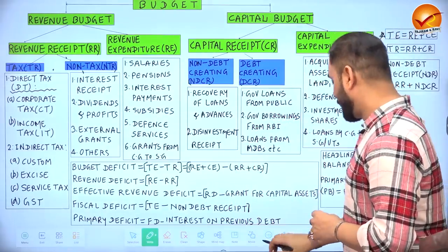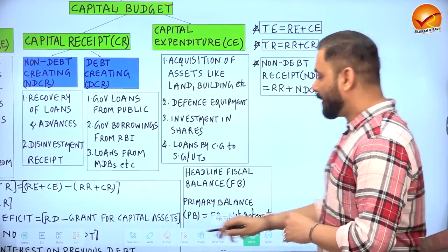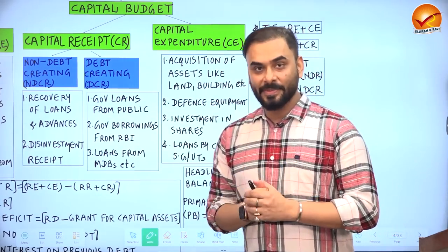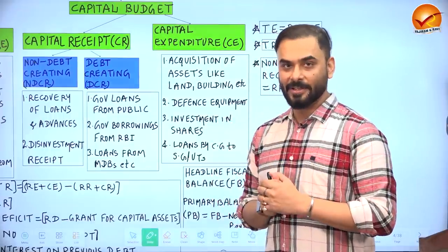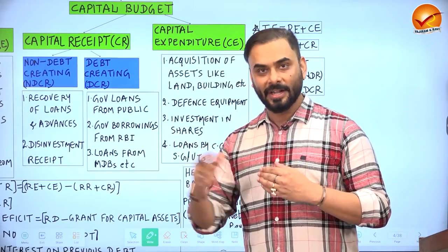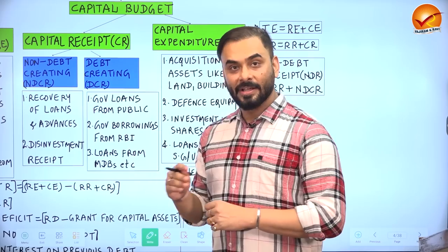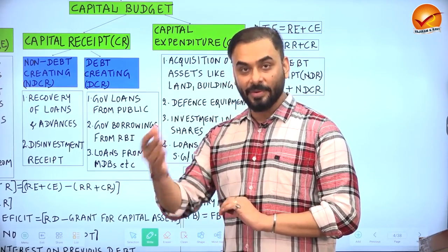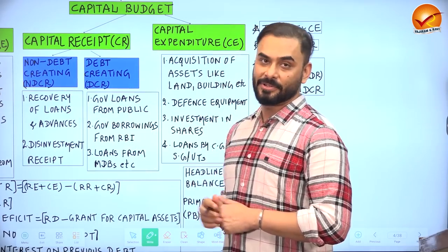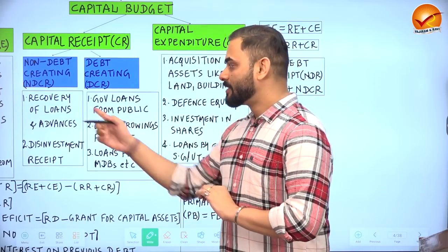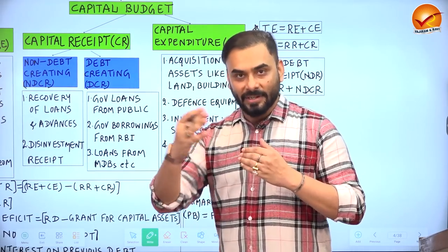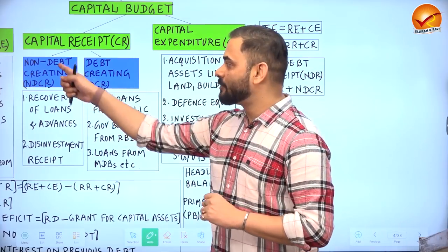The capital budget can be divided into capital receipts and capital expenditure. Capital receipts are the different ways the government raises capital. There are two types: non-debt creating capital receipts — capital the government does not have to return to anyone, such as disinvestment or privatization proceeds, or recovery of previously given loans — and debt-creating capital receipts, such as loans from the IMF, borrowings from RBI, or market borrowings through bonds, all of which must be repaid.